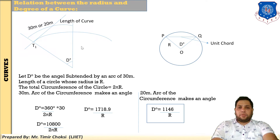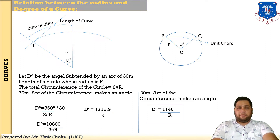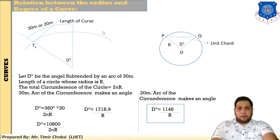Now, understanding the designations of the curve, I will explain the relation between the radius and degree of curve. There are two major elements used in a curve: one is radius and one is degree. Here I have taken a 30-meter or 20-meter arc — that means length of curve — and I have taken the arc definition, not the chord definition. You can prove the same formula using the chord definition, but in this session I have taken the arc definition.